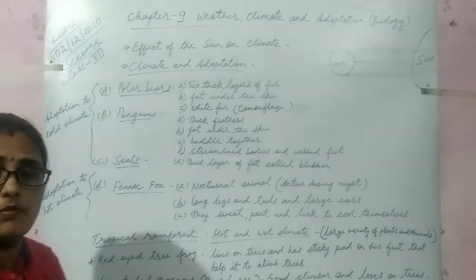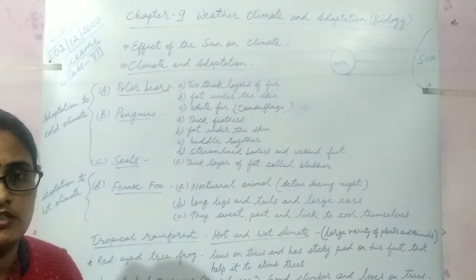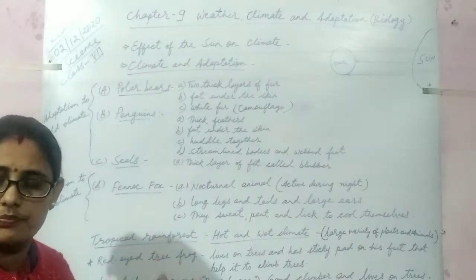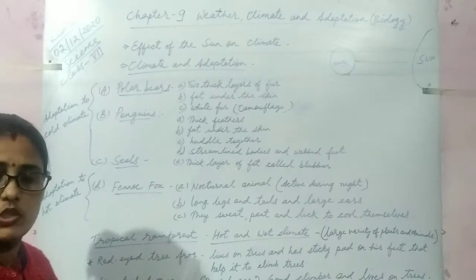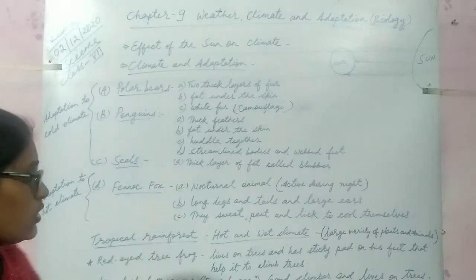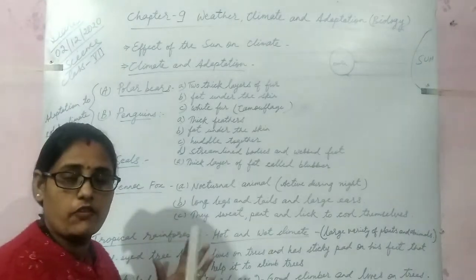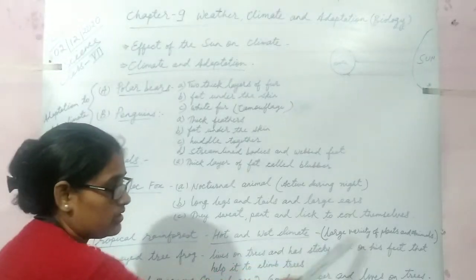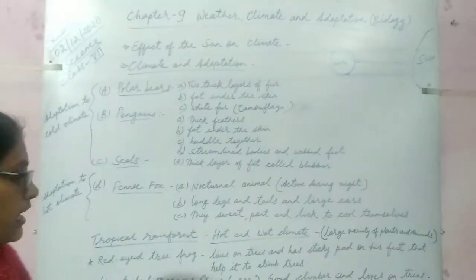Let's discuss about the new term, that is tropical rainforest. Tropical regions are the regions which are situated near the equator. So it contains a hot and wet climate and there is a large variety of plants and animals.